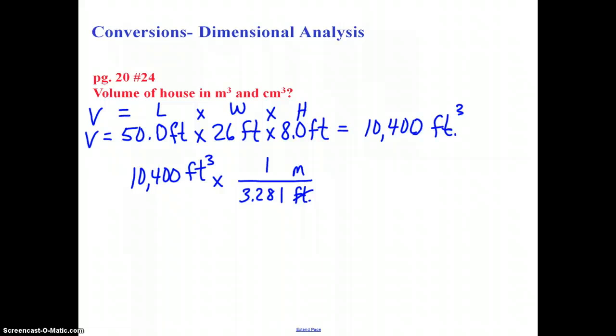To accomplish this, we either perform this calculation two more times, or we can use a little math trick and just cube this quantity. That would give us cubic meters and cubic feet. But what we also have to remember is to cube the number as well. This now would cancel out our cubic feet. And to get our answer, we take 10,400 and divide by 3.281 cubed.